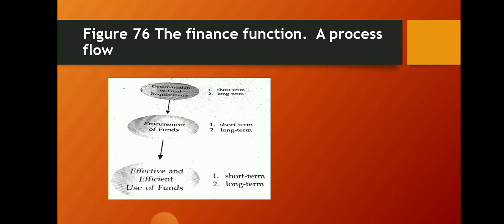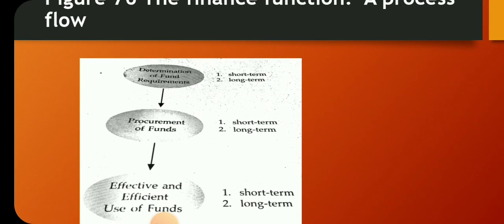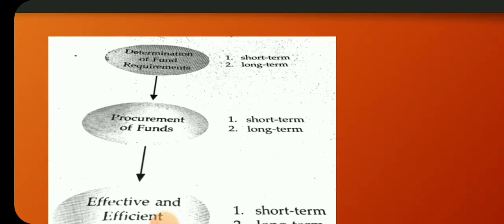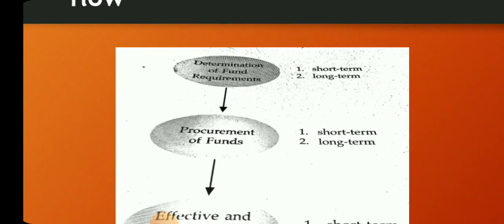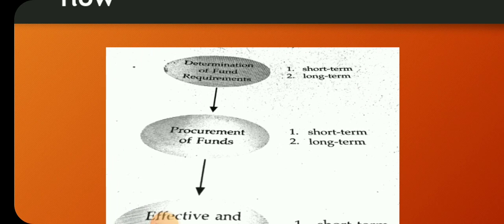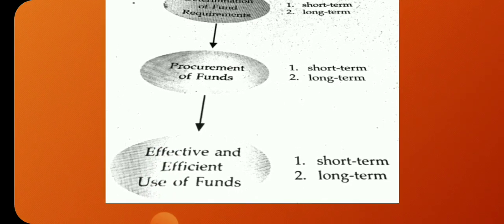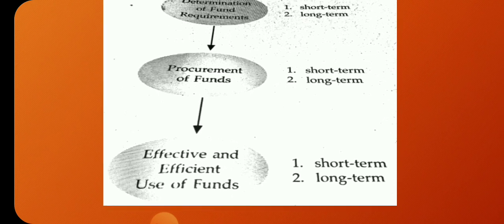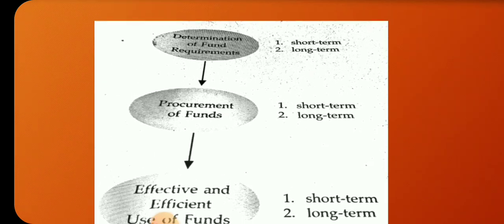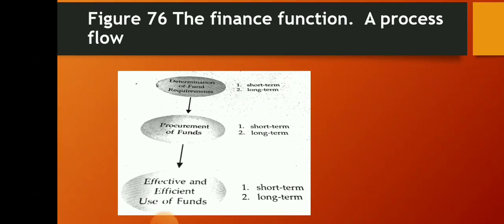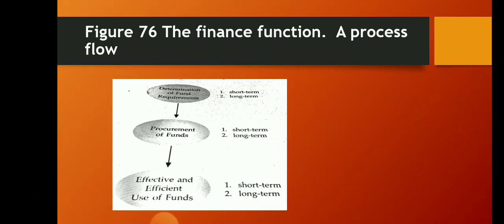In figure 76, the finance function is shown as a process flow. We have the determination of funds requirements, which can be either short-term or long-term; the procurement of funds, short-term and long-term; and the effective and efficient use of funds, which can also be short-term or long-term. This is an example of the process flow of the finance function.